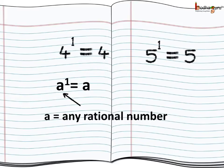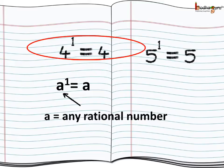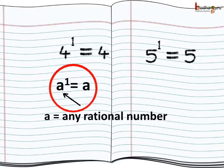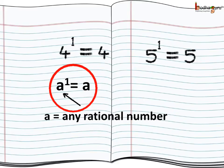So we can say any rational number to the power 0 is equal to 1. And any rational number to the power 1 is that number itself. For example, 4 to the power 1 means only one 4, that is 4 itself. 5 to the power 1 means 5 itself. So any rational number a to the power 1 is equal to a.